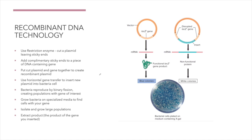In recombinant DNA technology — a field of biotechnology in which we genetically manipulate different bacteria — we use a restriction enzyme to cut a plasmid, leaving sticky ends, and add complementary sticky ends to a piece of DNA containing our gene of interest. We put the plasmid and gene together to create a new recombinant plasmid. When we use a plasmid to carry a new gene into a bacterial cell, that plasmid is referred to as a vector. This is also done with bacteriophages, which are used more often than plasmid vectors.